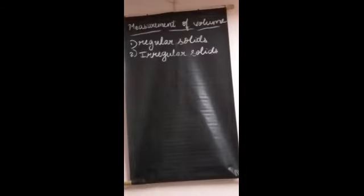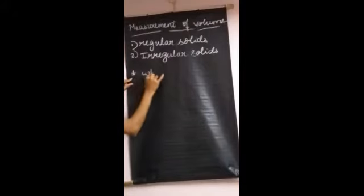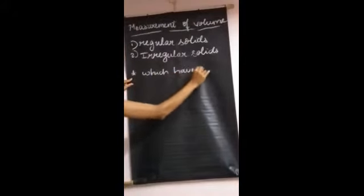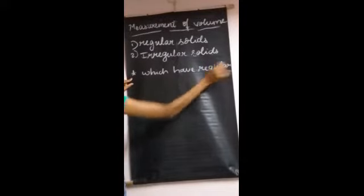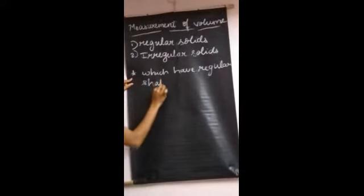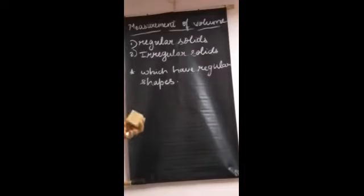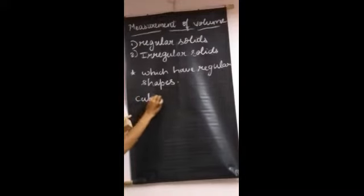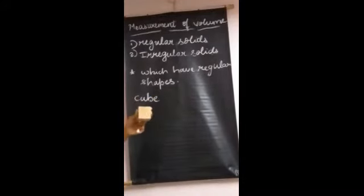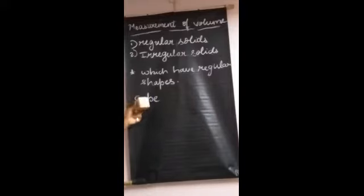What are regular solids? The solids which have regular shapes are known as regular solids. For example, this is a cube. Cube is a regular solid — it has faces and sides.